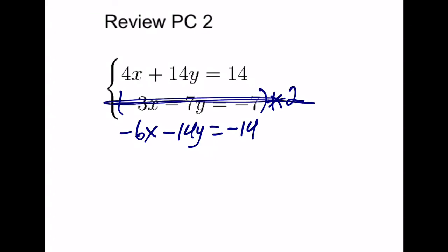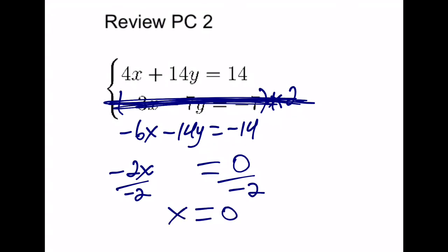We'll cross off that equation because now we are combining or adding straight down for this first one and this third one. So 4x plus a negative 6x gives us negative 2x. 14y plus a negative 14y cancels out. And 14 plus a negative 14 also cancels out to give us 0. So that if we divide both sides by a negative 2, we get x equals 0. We're halfway to our answer.